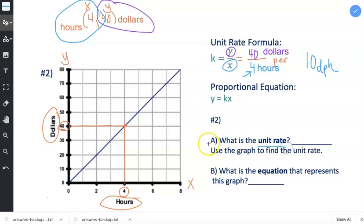In fact, I can write that down here. This is part A: What is the unit rate? 10 dollars per hour. And we're done with part A.